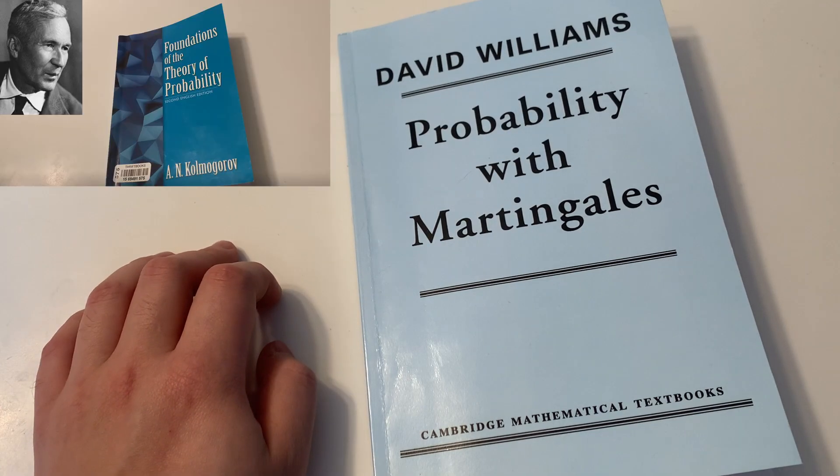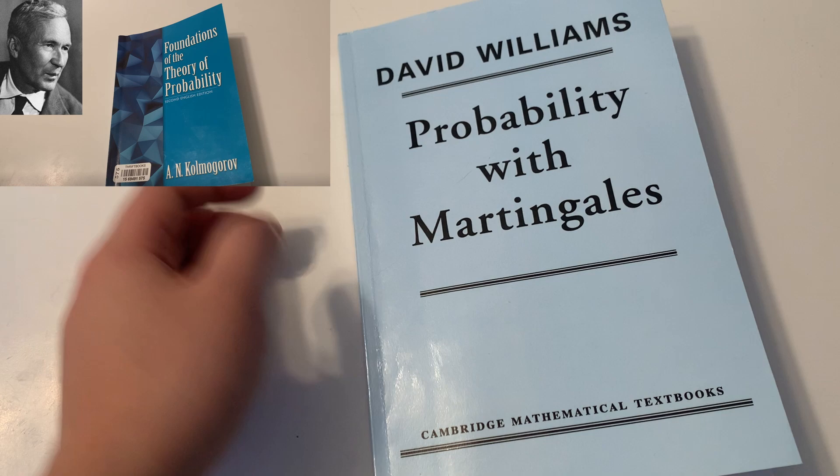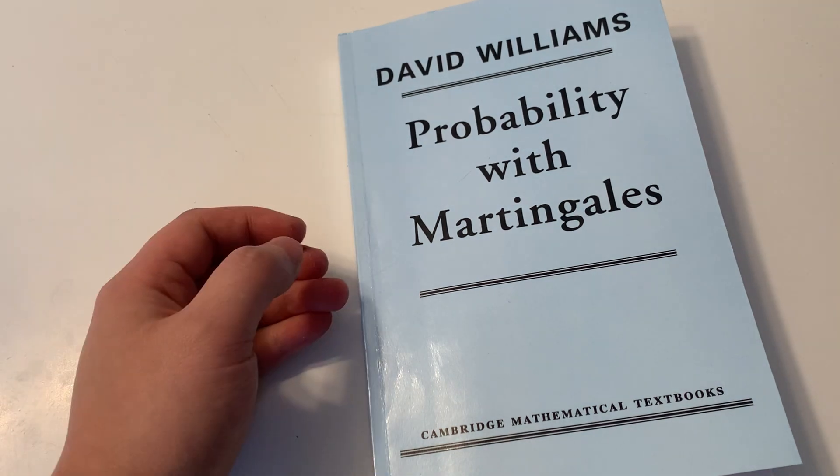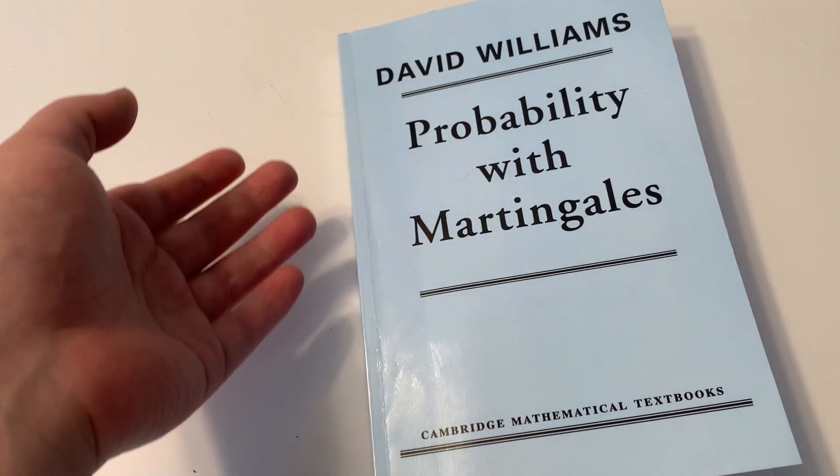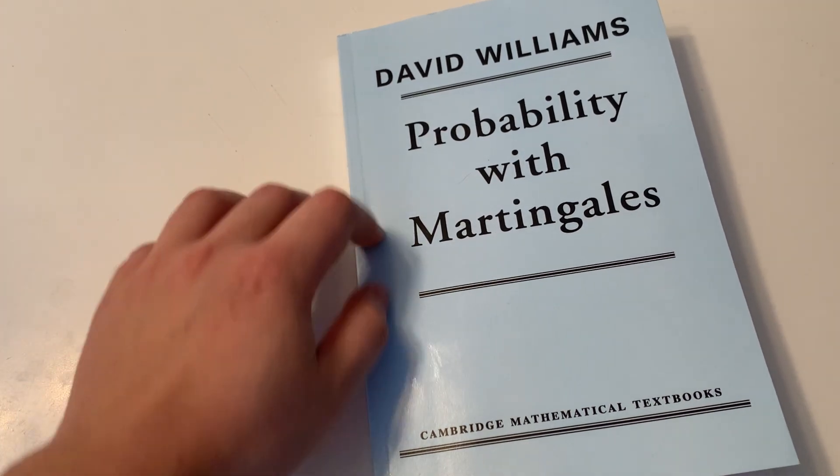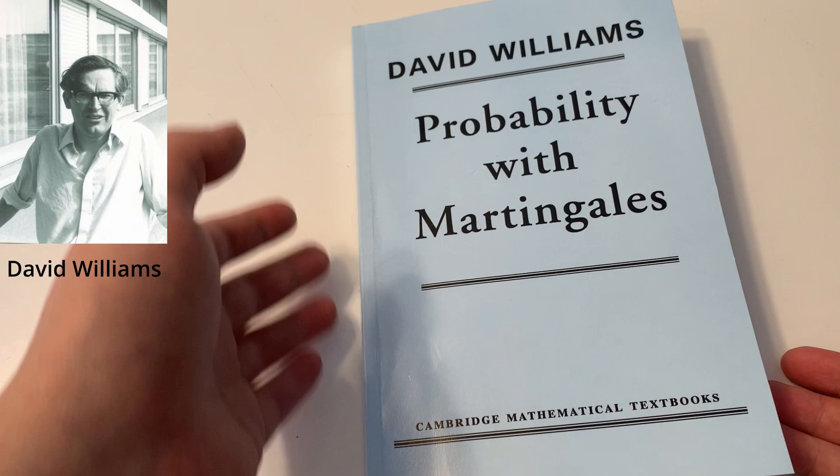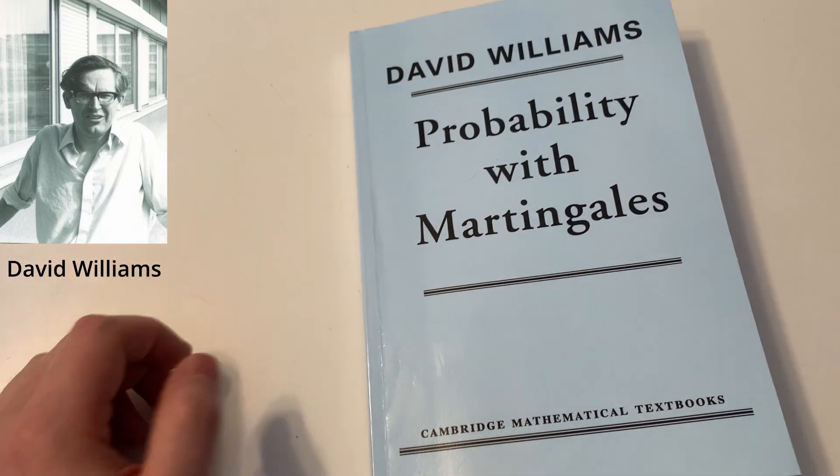Hello. Last week I made a video about Kolmogorov's original monograph on axiomatizing probability theory, in which I also showed this book briefly, that is Probability with Martingales by David Williams, and a viewer requested that I also review this book as well. So here we go.